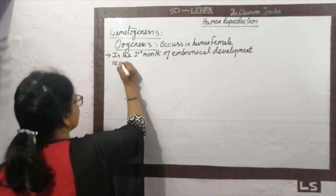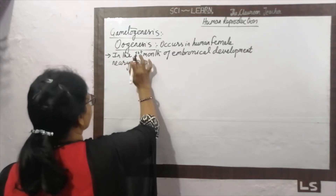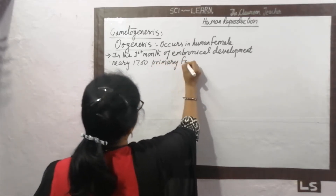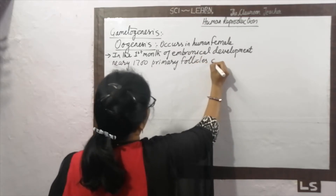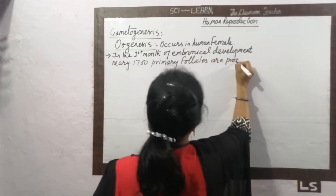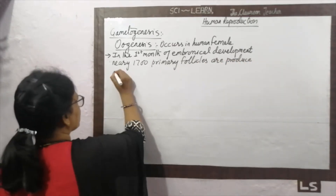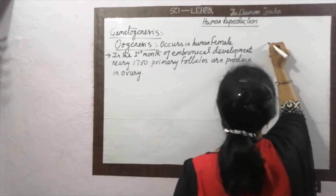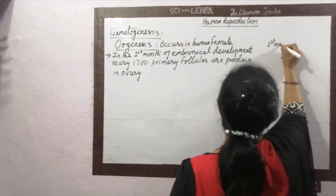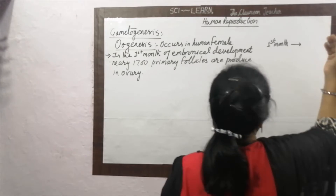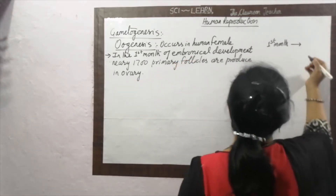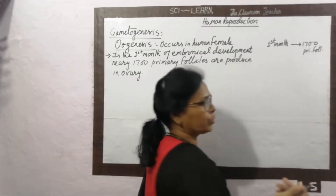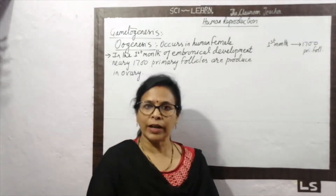In the first month of embryonical development, nearly 1700 primary follicles are produced in the ovary. This occurs right at the very beginning — in the first month of pregnancy, or the first month of embryonical development.